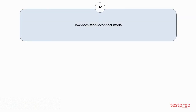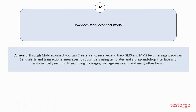Question number twelve: How does Mobile Connect work? Through Mobile Connect, you can create, send, receive, and track SMS and MMS text messages. You can send alerts and transactional messages to subscribers using templates and a drag-and-drop interface, and automatically respond to incoming messages, manage keywords, and many other tasks.